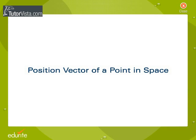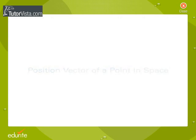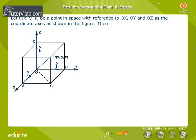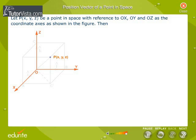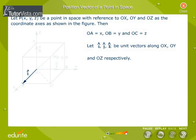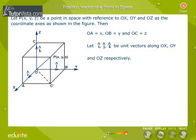Let P(x, y, z) be a point in space with reference to OX, OY, and OZ as coordinate axes, as shown in the figure. Then OA = x, OB = y, and OC = z. Let i cap, j cap, and k cap be unit vectors along OX, OY, and OZ respectively. Vector OA = x i cap, vector OB = y j cap, and vector OC = z k cap.